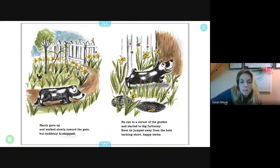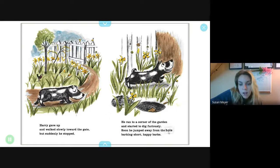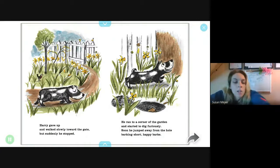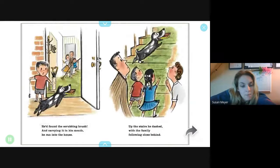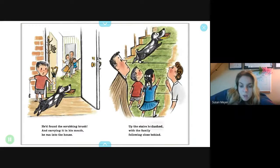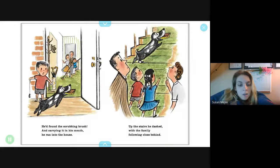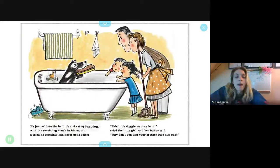Harry gave up and walked slowly toward the gate. But suddenly he stopped. He ran to a corner of the garden and started to dig furiously. Soon he jumped away from the hole, barking short happy barks. He found the scrubbing brush. He carried it in his mouth and ran into the house. Up the stairs he dashed, with the family following close behind.